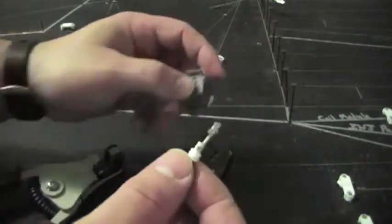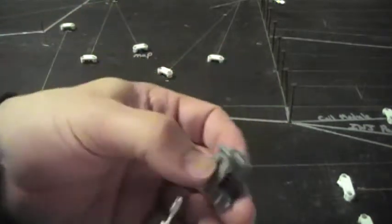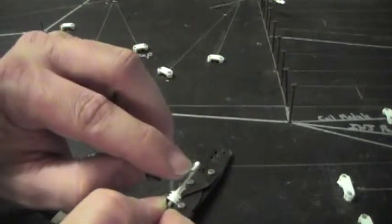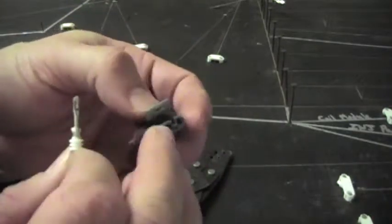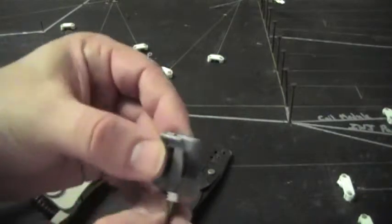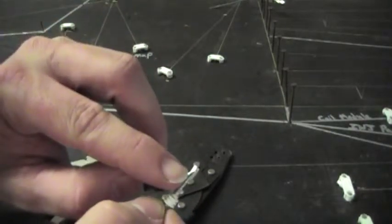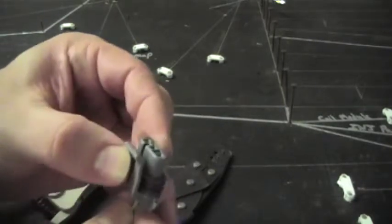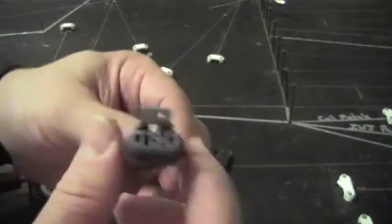Now we're ready to install it in our connector, in our part number 89. Go ahead and insert the terminal into the connector with the top locking piece on the very top. Insert until you hear it lock, and you're done.